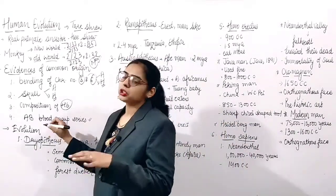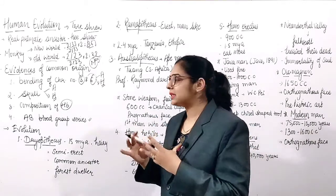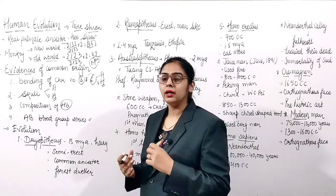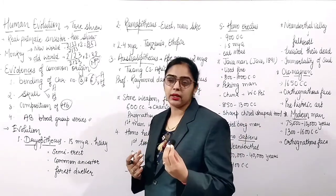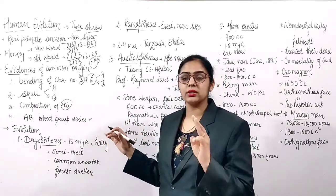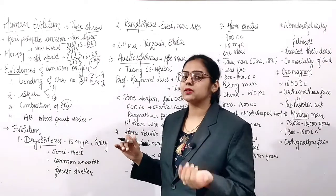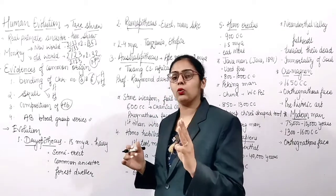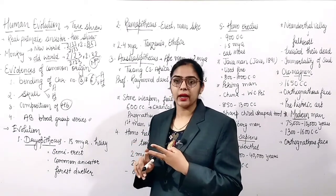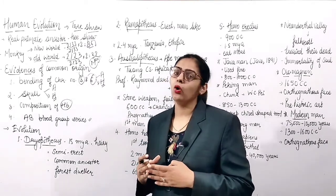Now let's talk about real evolution - this is what always comes in exams like NEET. Three things are divided: first, the sequence in which humans evolved; second, the common or distinguished characters of each; and third, their cranial capacity or brain capacity. These are the three things you must know when studying human evolution.